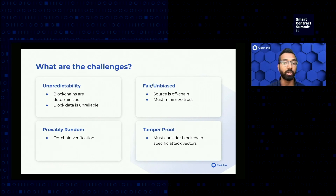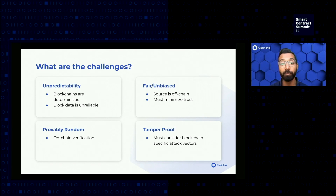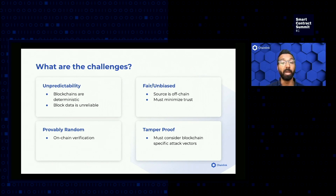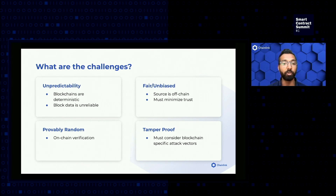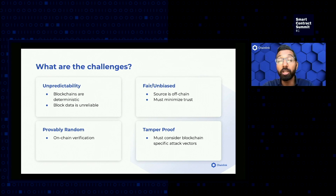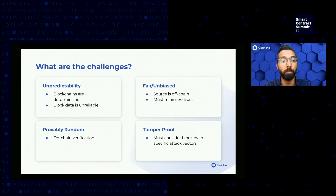It is also important to consider the impact of finality by chain and the opportunities for manipulation that are unique to blockchains, to ensure that it's actually tamper-proof. We must consider the various actors that can benefit from predicting, biasing, or generally tampering with the results. These are just some of the critical factors we look into when considering how to create an elegant VRF solution that can provide indisputably fair outcomes.